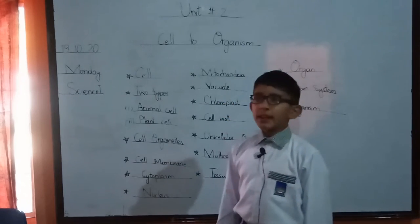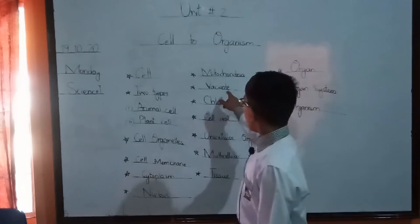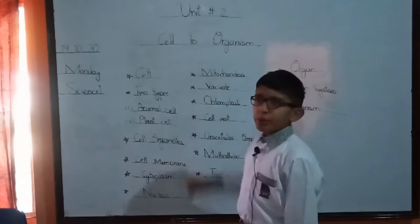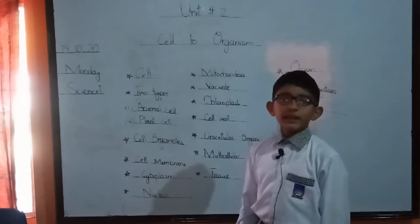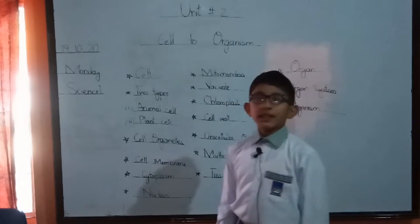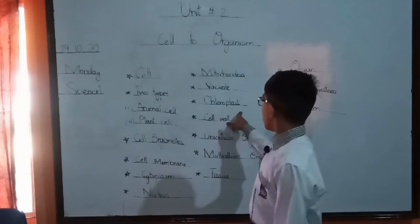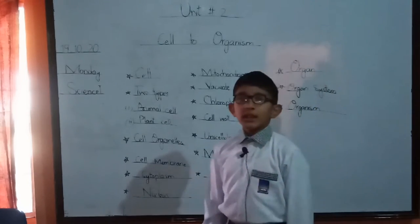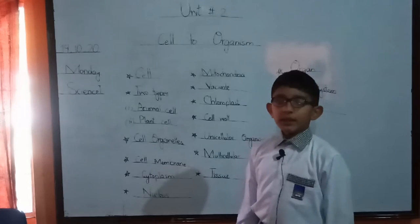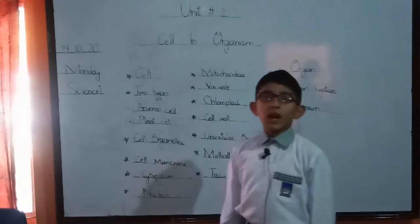In the plant cell there is a big vacuole, and in an animal cell there is a small vacuole. Chloroplast is a small pigment. Chloroplast has a very small pigment.